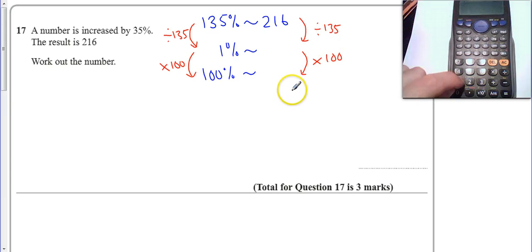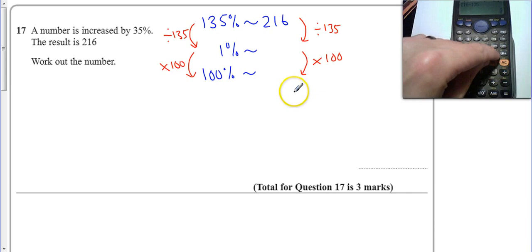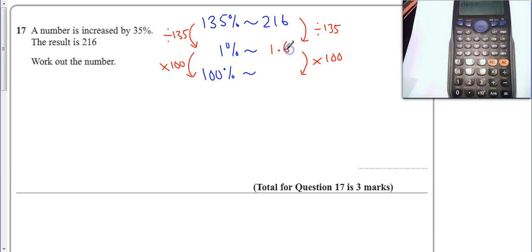So just look at my calculator, I've got 216 divided by 135 gives me 1.6, and I'm just going to times that by 100 is 160. So I know that the number should have been 160.